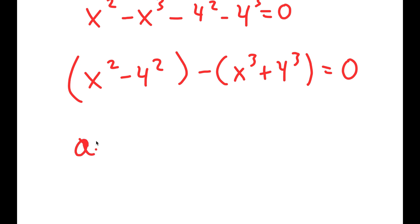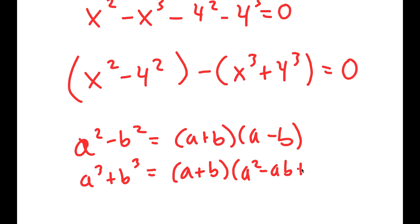And a² - b² is equal to (a+b)(a-b) and a³ + b³ is equal to (a+b)(a² - ab + b²).